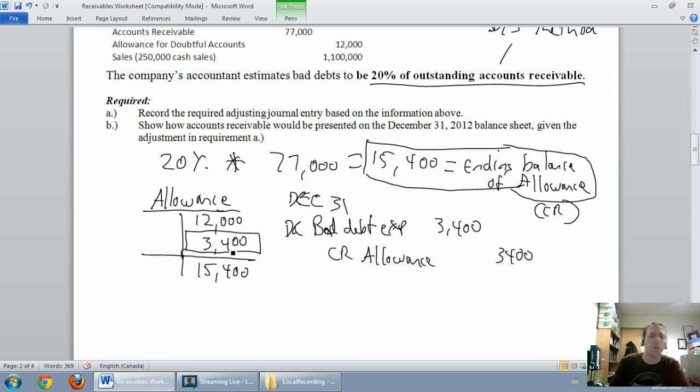So again, I knew I started with $12,000 in my allowance. I knew I had to end with $15,400 credit balance. So to go from a $12,000 credit balance to a $15,400 credit balance, I credit it $3,400. So I credit my allowance $3,400, debit bad debt expense $3,400, I've got a good entry.